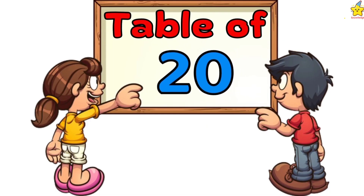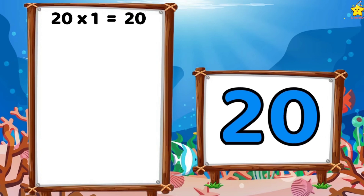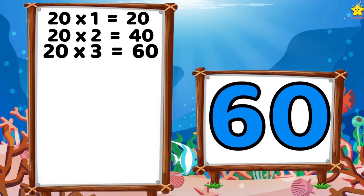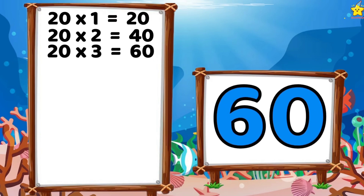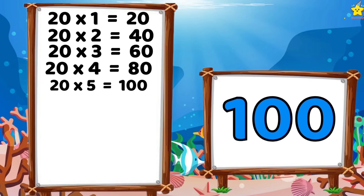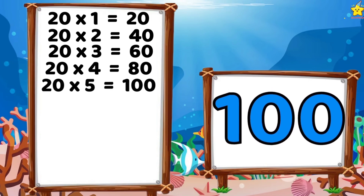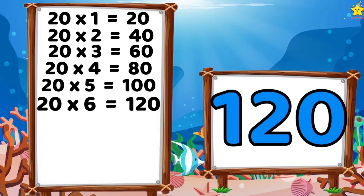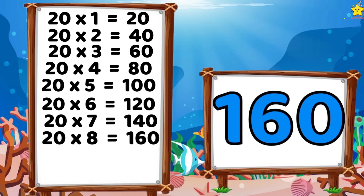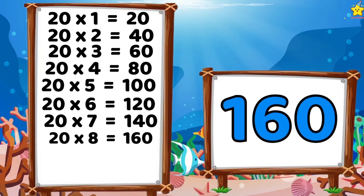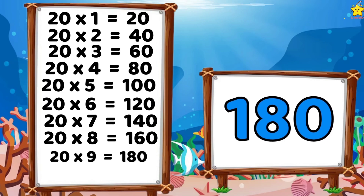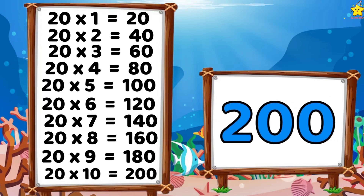Table of 20. 20 ones are 20. 20 twos are 40. 20 threes are 60. 20 fours are 80. 20 fives are 100. 20 sixes are 120. 20 sevens are 140. 20 eights are 160. 20 nines are 180. 20 tens are 200.